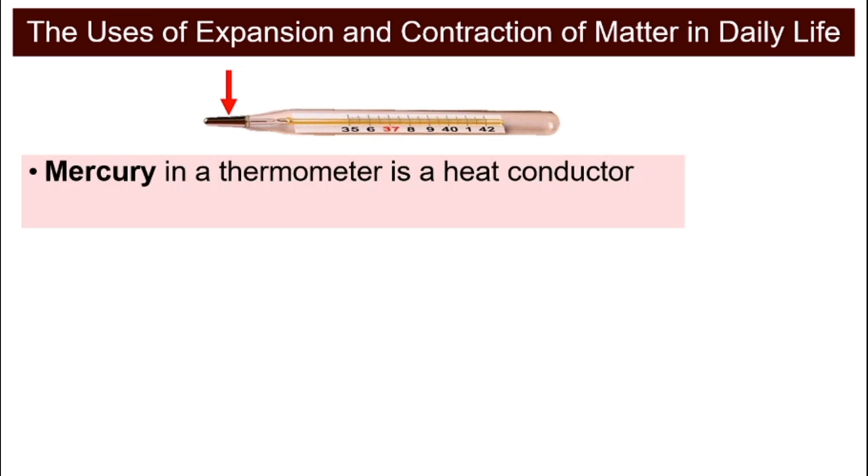What are the uses of expansion and contraction of matter in our daily life? They are very useful. For example, the mercury in a thermometer is a heat conductor. We looked at this in the previous video. And how do we read the temperature from a thermometer? It is from the expansion and contraction of the mercury stored in the thermometer. When it is hot, the mercury will expand and move towards the right, so you will read a higher temperature.